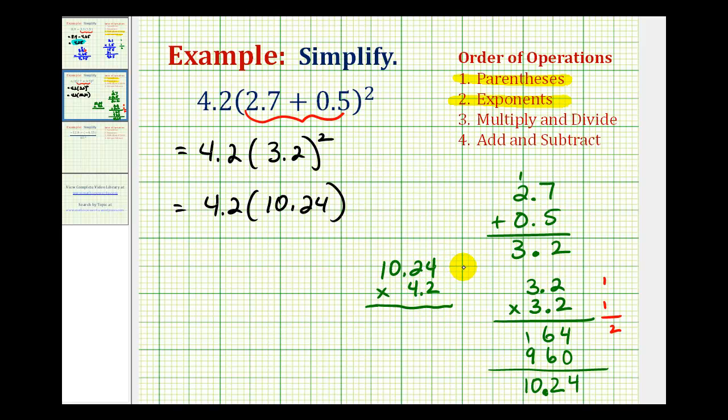Well, this decimal has 2 decimal places, and this has 1, and 2 plus 1 is 3, so now the product must have 3 decimal places.